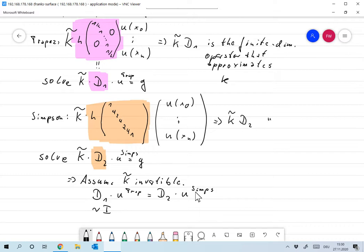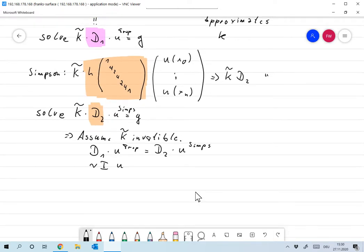D_1 was the matrix with ones on the main diagonal, only the last and final point was one half, so this is almost the identity matrix. This is more or less u trapezoidal, which equals D_2 times u Simpson. But since D_2 has the elements 2 and 4 adjacent on its main diagonal, if u Simpson was constant, then u trapezoidal would be fast varying and the other way around. This is exactly what we saw in the numerical experiment.